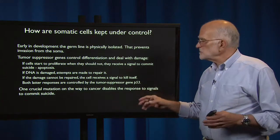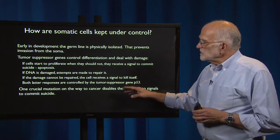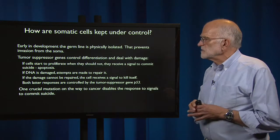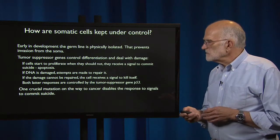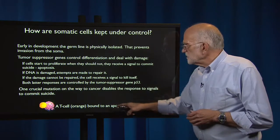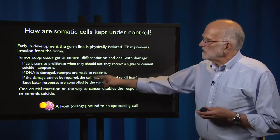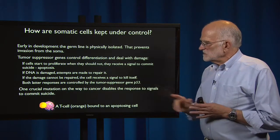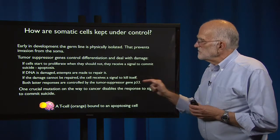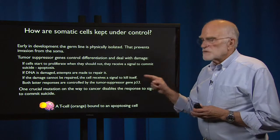In cancer biology, you hear a lot about P53. One crucial mutation on the way to cancer is the one that disables the response to a signal to commit suicide. Here is a figure of a T cell in orange bound to an apoptosing cell. That T cell has received a signal that the DNA in this apoptosing cell is defective and cannot be repaired, and it's giving it a signal to commit suicide. Cancer ignores that signal.